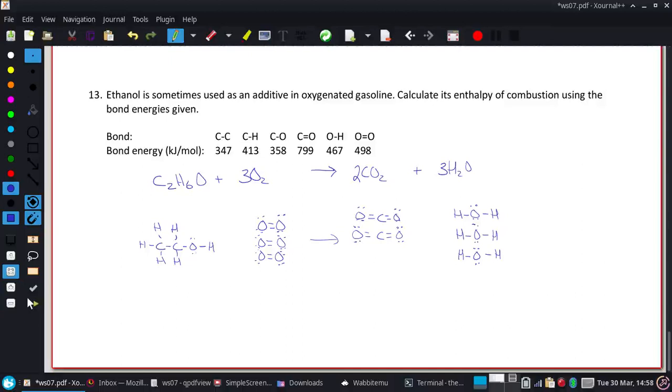All right, so bonds being broke, I have a bunch of CH bonds. And it's one, two, three, four, five, a carbon-carbon bond, a carbon-oxygen bond, and an oxygen-hydrogen bond. Now those four are just coming from the ethanol.